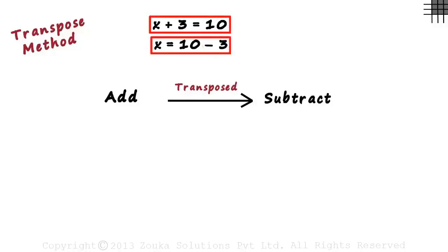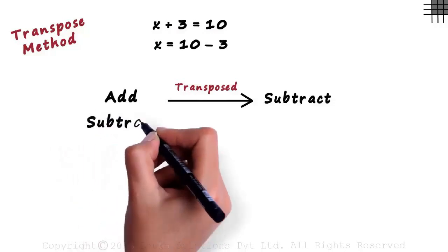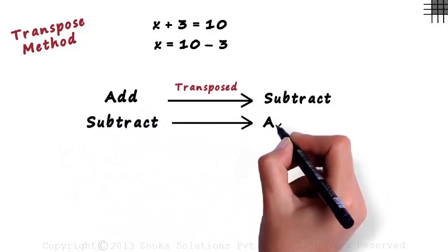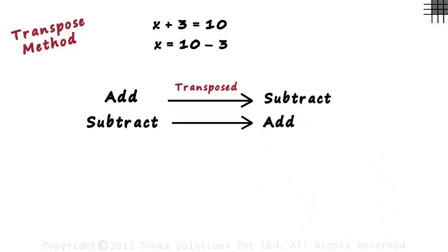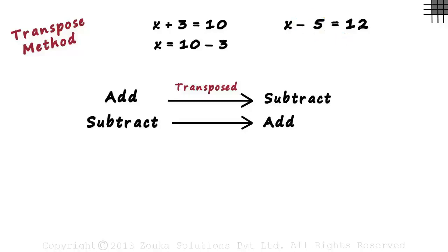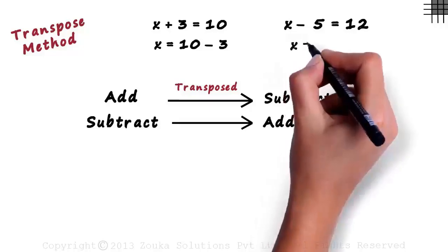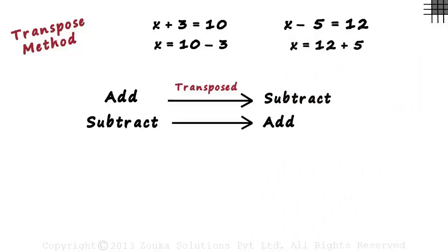These two are actually the same equations written differently. The second concept says that if a term is subtracted on one side, we can transpose it to the other side by adding it. If the equation was x minus 5 equals 12, we would have transposed 5 to the right hand side and added it to 12. The equation would then be x equals 12 plus 5. So here, 5 was an existing term that was subtracted, and we transposed it to the other side by adding it.